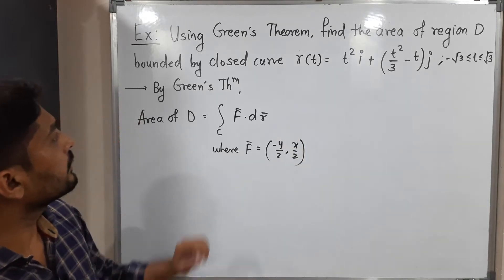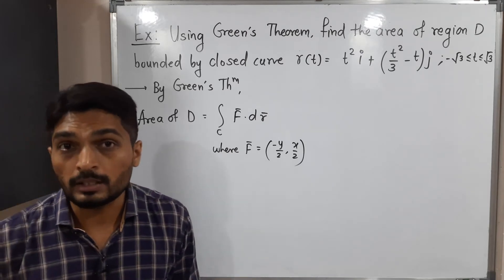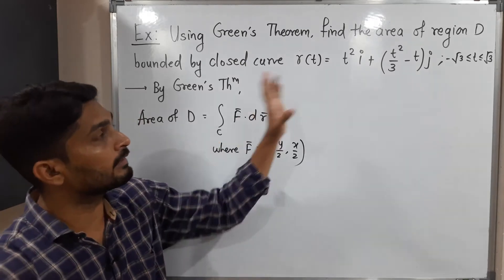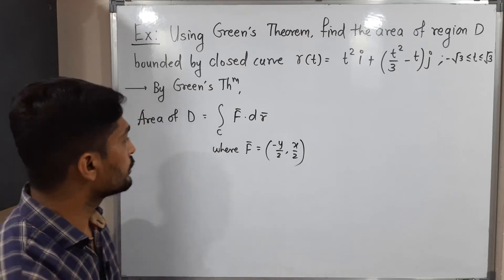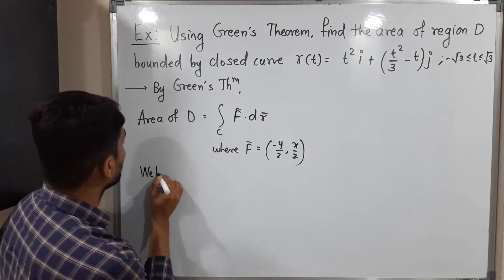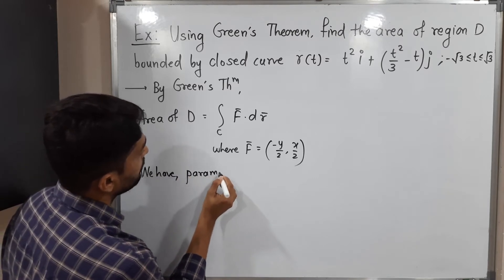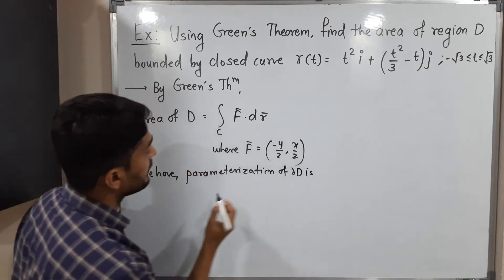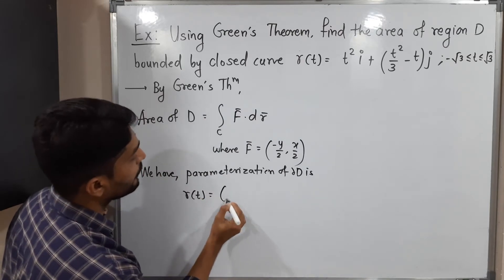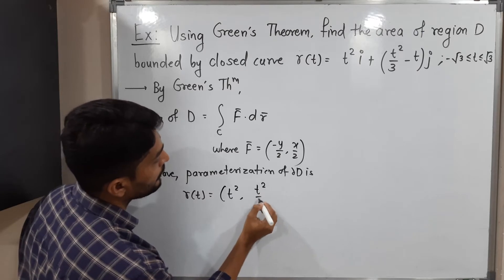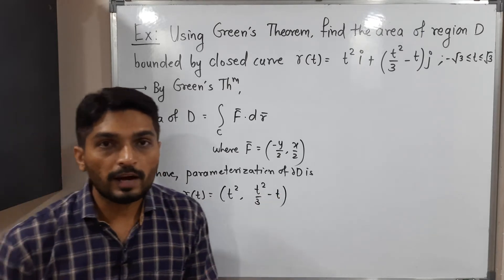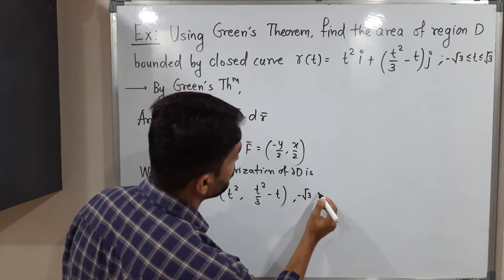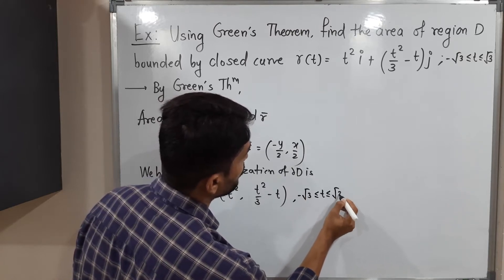So we have f̄ = (-y/2, x/2). The most important thing is the parametrization of C. Fortunately, in the problem itself they have directly given the parametrization, so I'm going to use that. The parametrization of the boundary of D is R(t) = (t², t²/3 - t), with limits -√3 ≤ t ≤ √3.